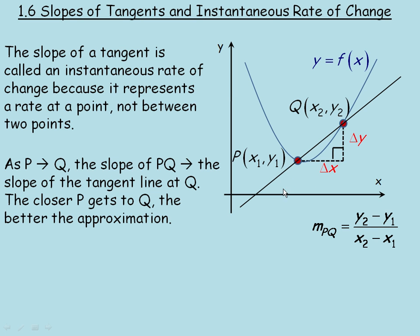In a previous note, we talked about how this graph would change from the point P to the point Q, and that was an average rate of change over a distance delta X, a run delta X. And we can find that rate using the slope formula.